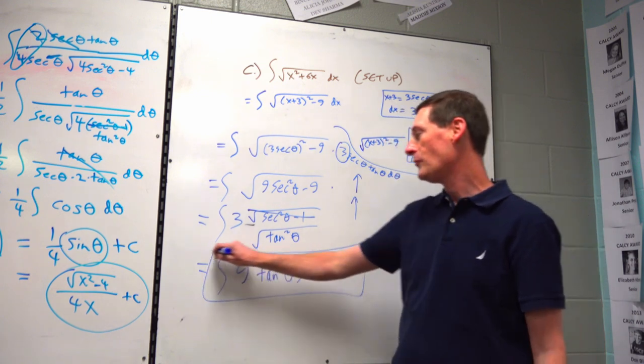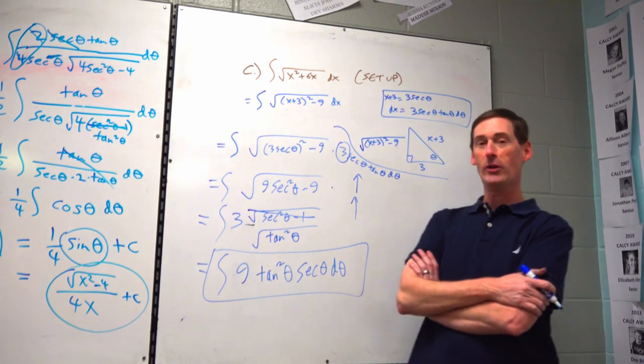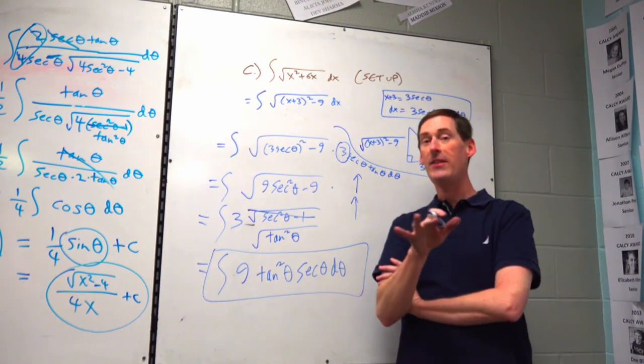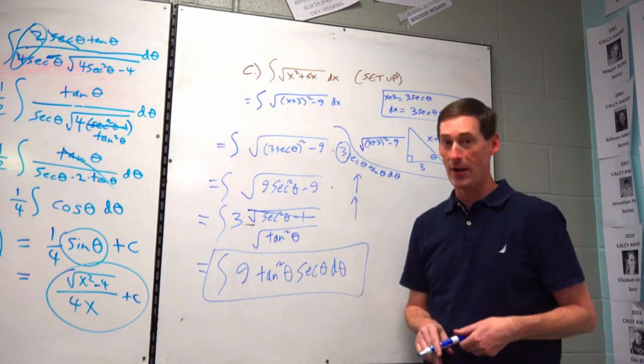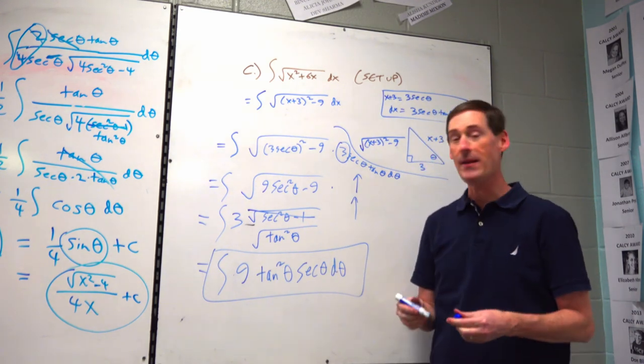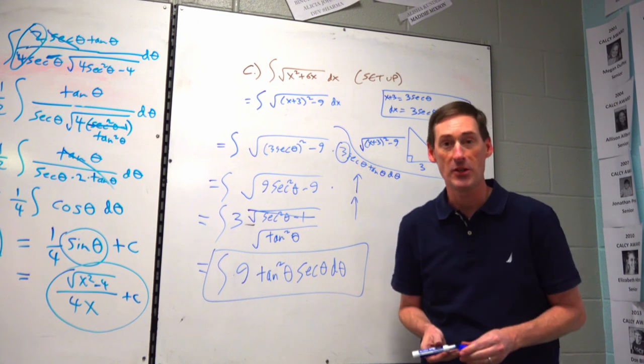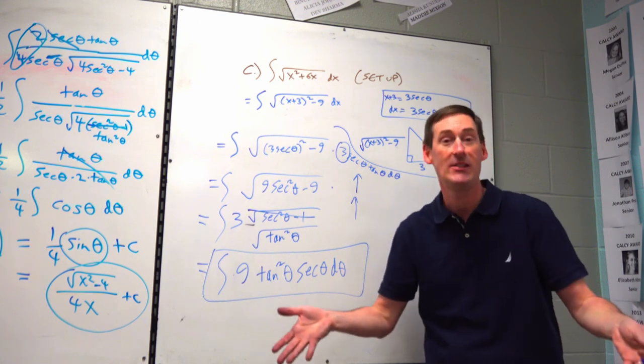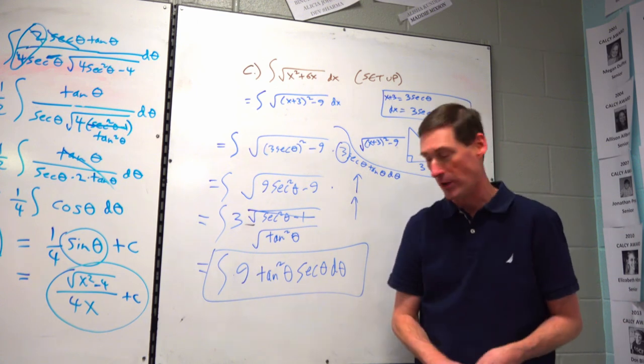By the way, if you look on your ten things you learned about calculus in chapter 9, this integral of tan²(θ)·secant(θ) is listed as one of the rare secant-tangent combos where u is actually secant rather than tangent. That's the end of the chapter — thank you very much.